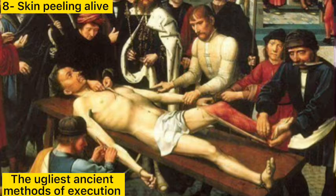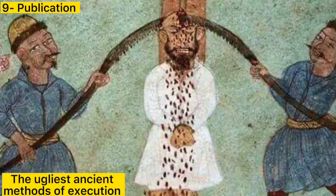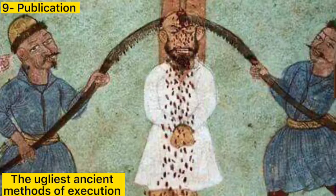Method 9: Execution by sawing. This method was used in the Middle Ages, where the criminal was suspended upside down by his legs while a saw was used to split his body from between his legs down to his head, passing through his chest. Because of the upside-down position, blood continues reaching the brain, keeping the criminal alive for as long as possible. The Chinese version was considered more merciful — the criminal's head was sawed first, causing immediate death.